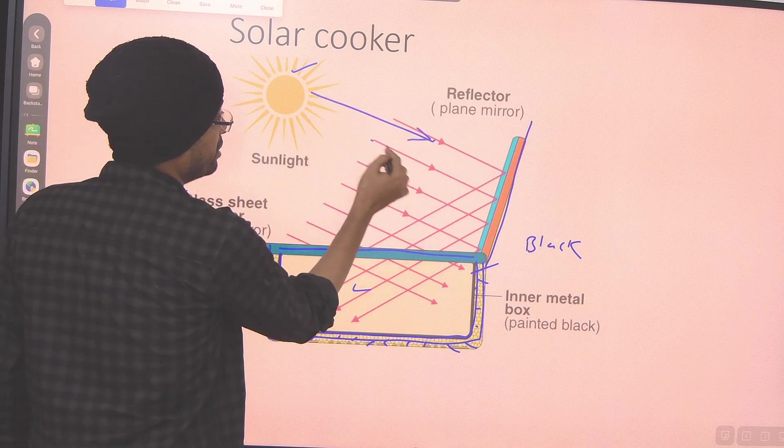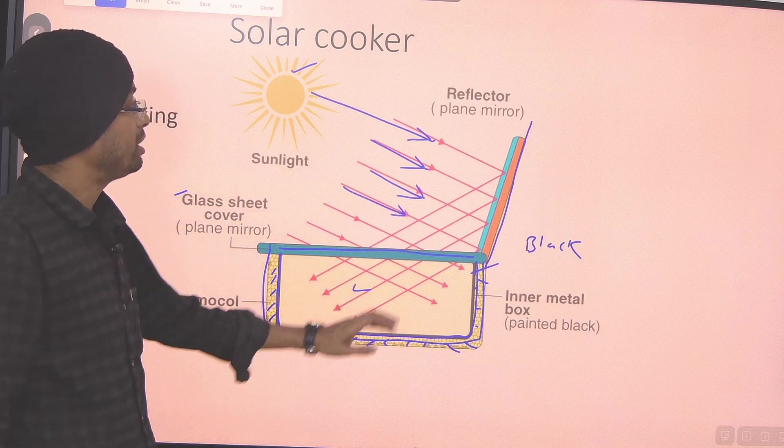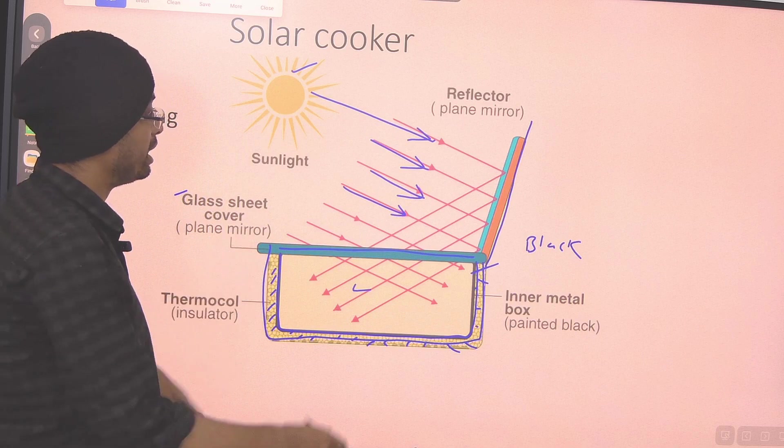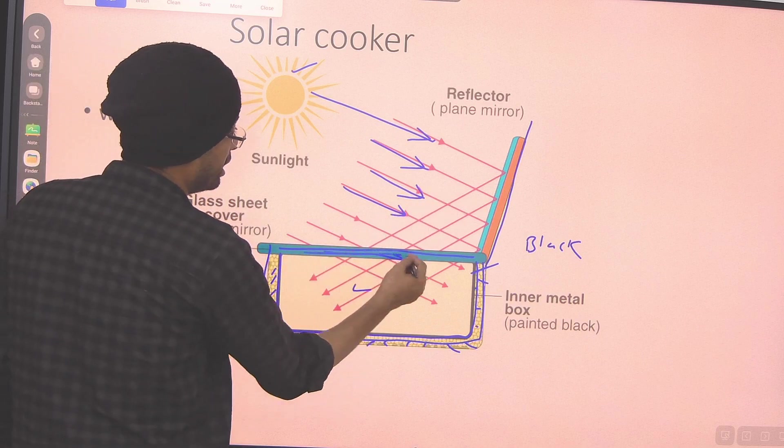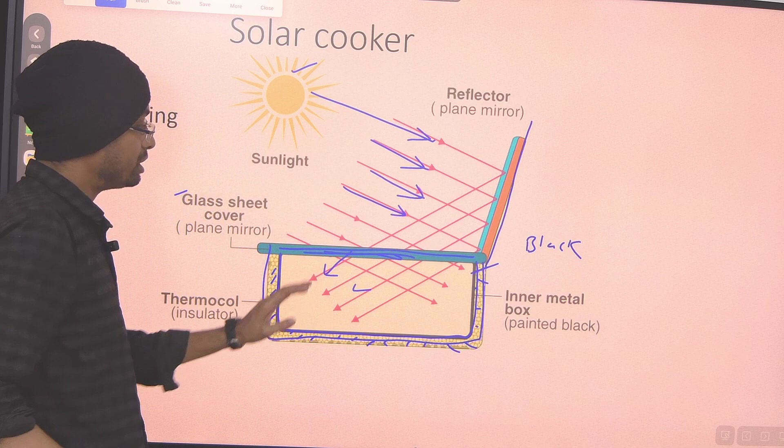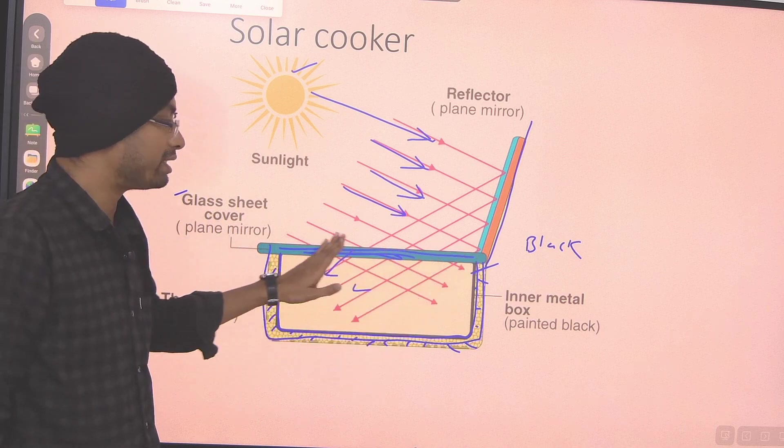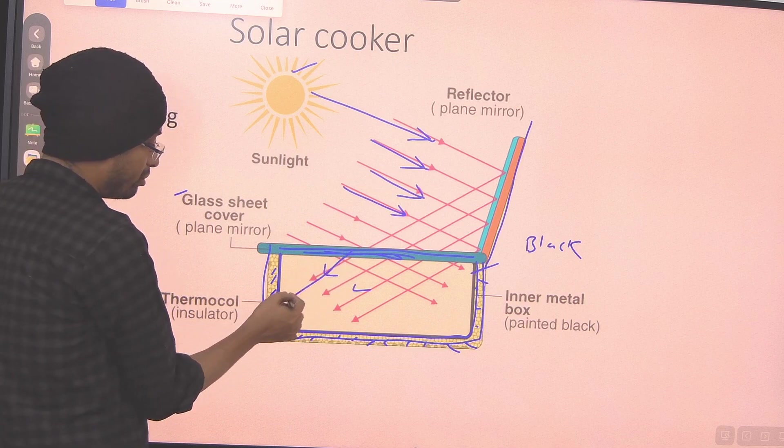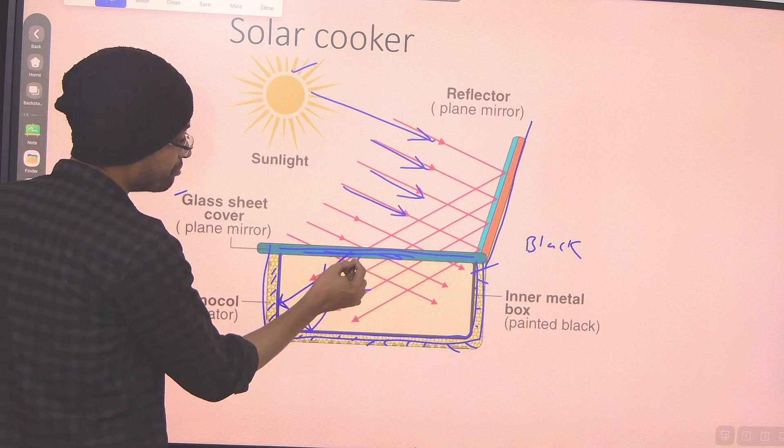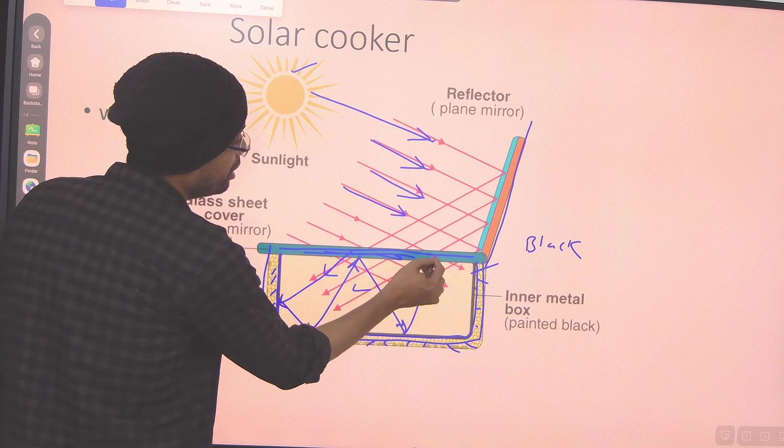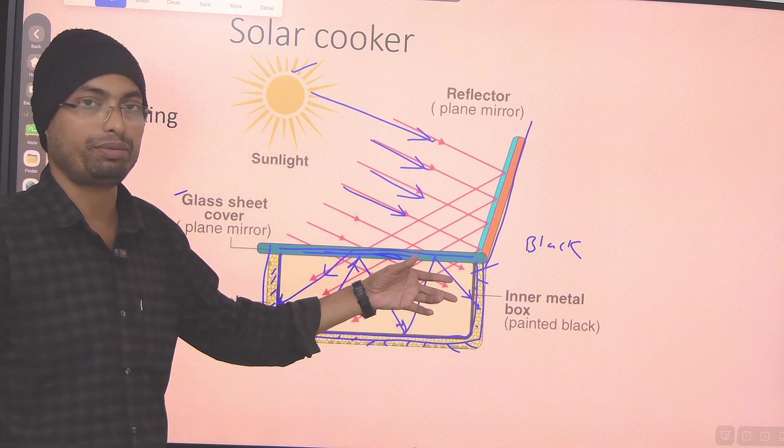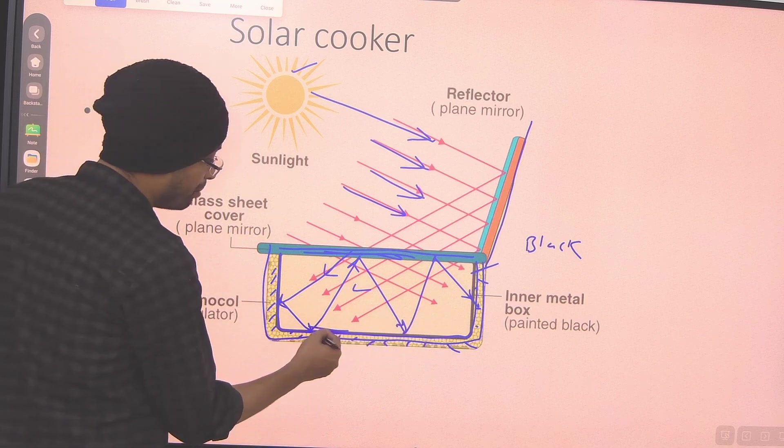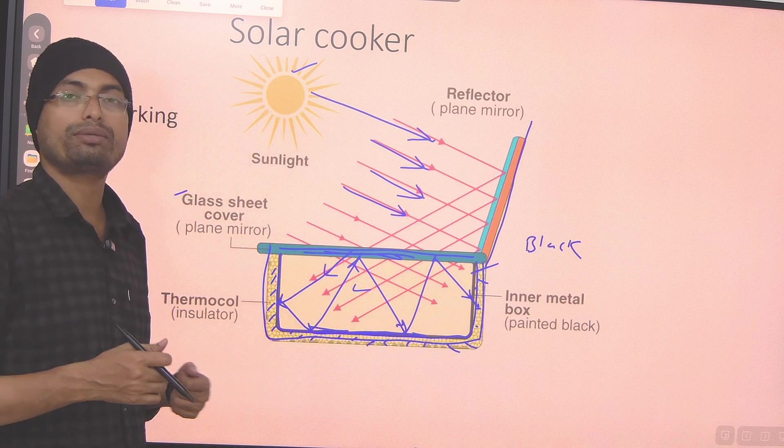When sunlight comes, we know that when it hits the plane mirror parallel, it will reflect parallel. So, these light rays will reflect parallel from the plane sheet and then enter. When it enters through the plane sheet layer, it will come to the inside and get trapped. It will be trapped inside.